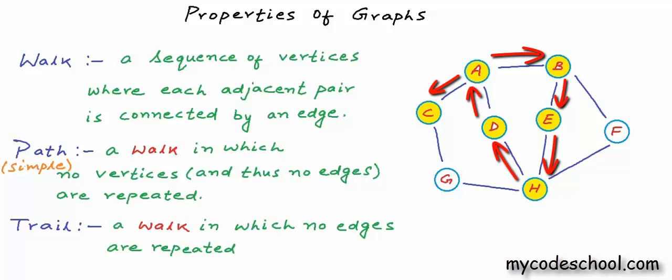Between two different vertices, if there is a walk in which vertices or edges are repeated, then there must also be a simple path — a walk in which vertices or edges would not be repeated. In this example walk starting at a and ending at c, there is a simple path from a to c with just one edge; all we need to do is avoid going to b, e, h, d and coming back again to a. This is why we mostly talk about simple path — if any other walk is possible, simple path is also possible. So throughout our lessons, when I say 'path' I mean simple path, and if it is not a simple path, I will say it explicitly.